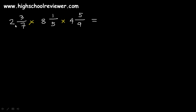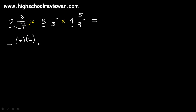We will now solve 2 and 3 over 7 multiplied by 8 and 1 over 5 multiplied by 4 and 5 over 9. To multiply fractions, make sure there are no whole numbers first. In this example there are 3 whole numbers, so we need to change all 3 fractions into improper fractions. Starting with 2 and 3 over 7: multiply the denominator by the whole number — 7 multiplied by 2 — then add the numerator, plus 3, and copy the denominator, 7.